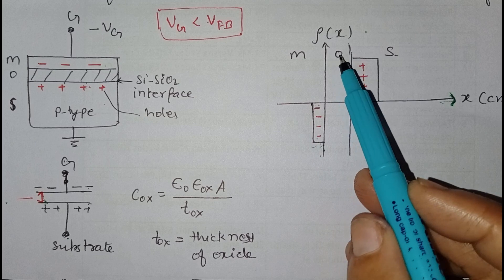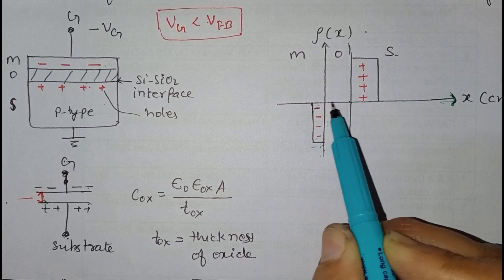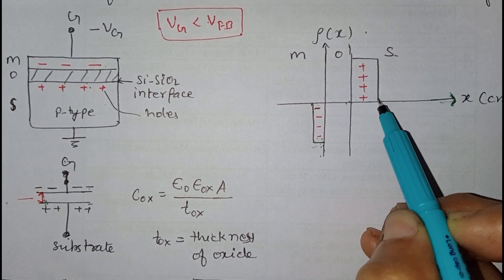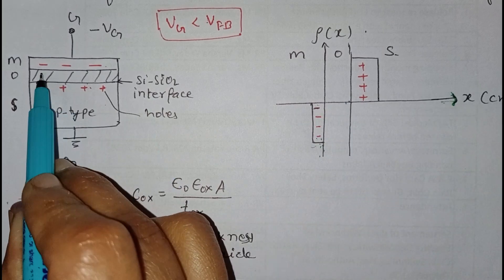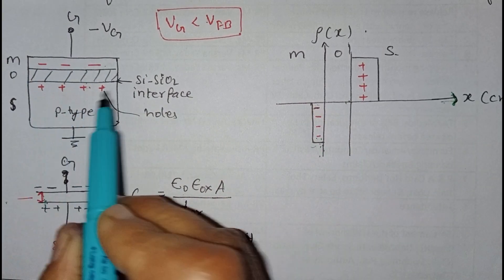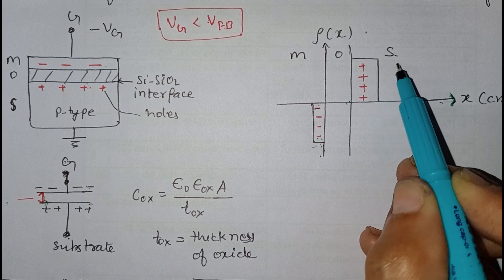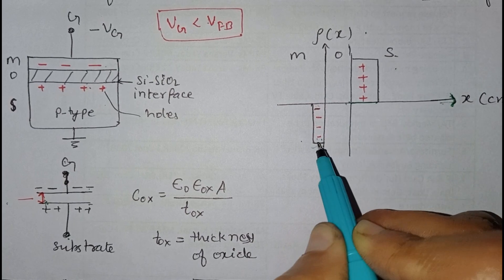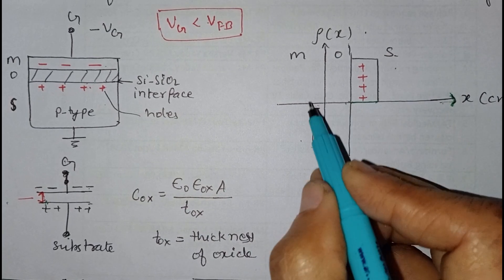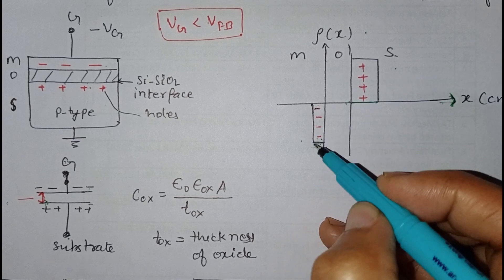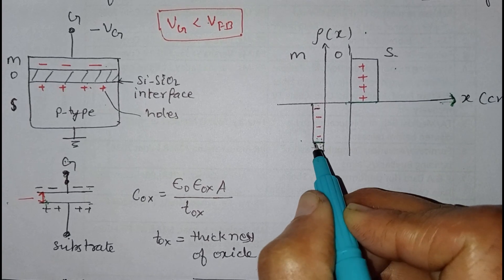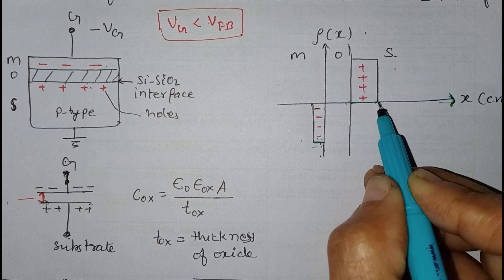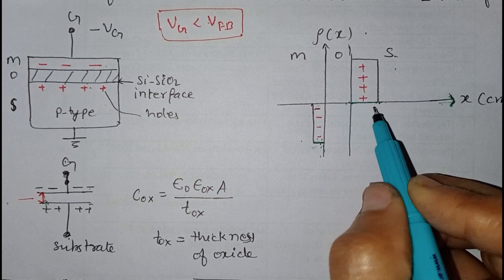Now we see the charge density diagram with respect to distance from the oxide layer. This shows the metal charge (negative) and the substrate charge (positive). In the metal side, the charge density is high so the width is narrow, whereas in the semiconductor side the charge density is less so the width is broader from the silicon–silicon dioxide interface.